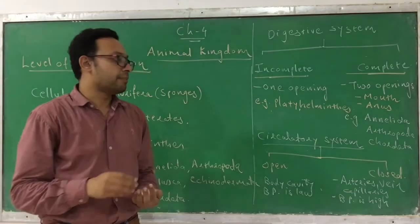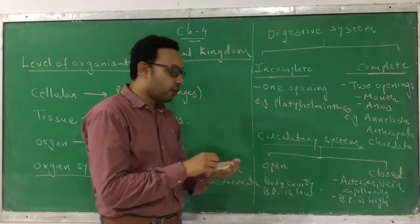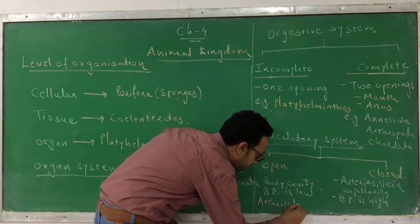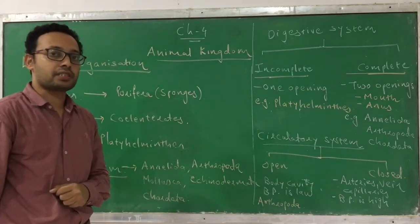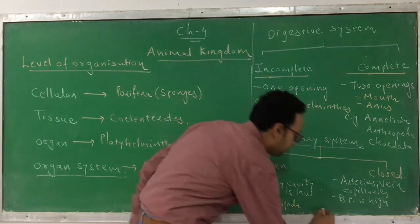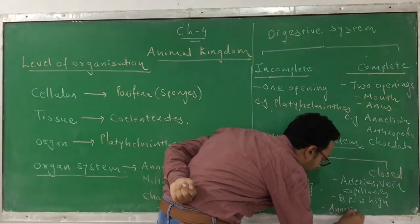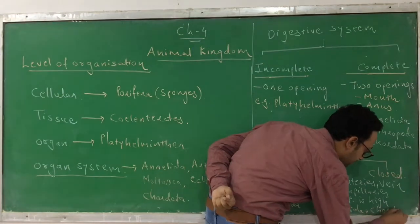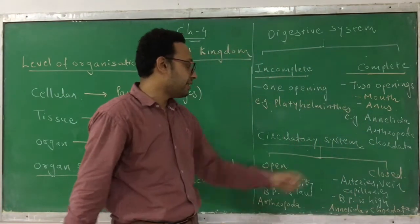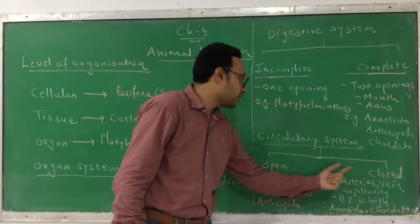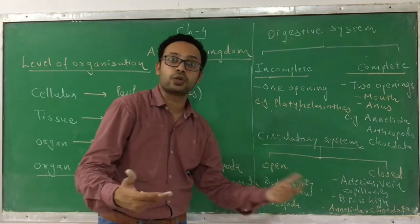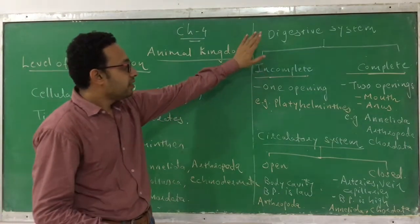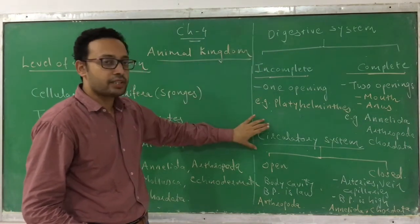The example of an open circulatory system is Arthropoda. The examples of a closed circulatory system are Annelida and Chordata. Arthropoda, like cockroach — cockroach comes under Arthropoda — they have an open circulatory system. So there are two kinds of systems found: digestive and circulatory, and these are their types.